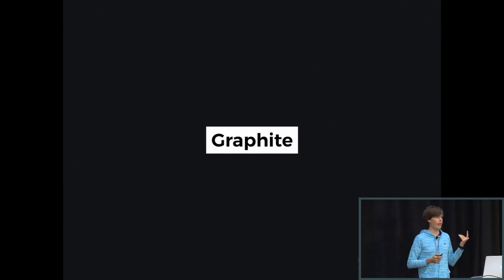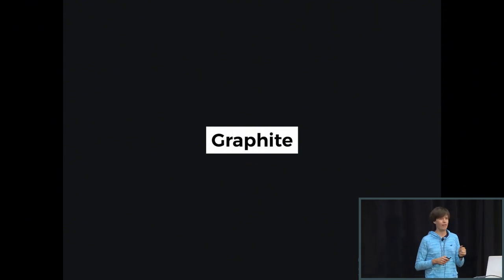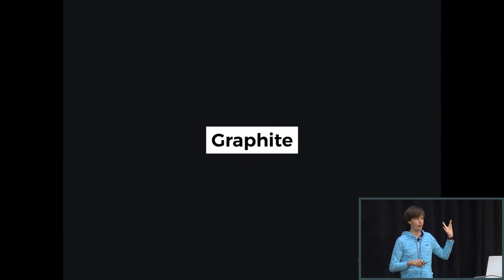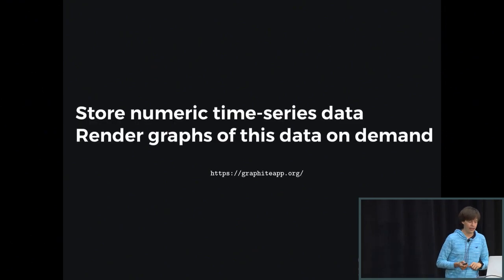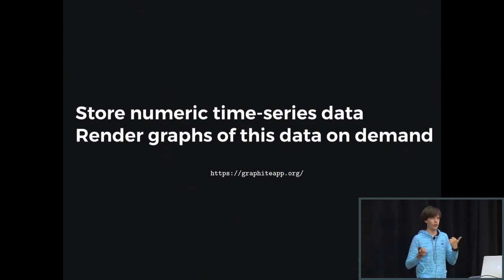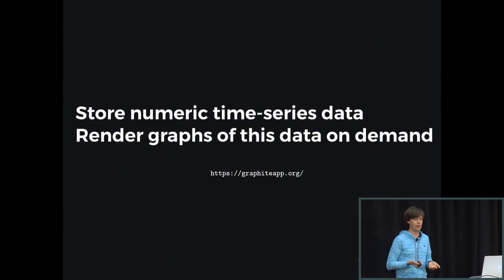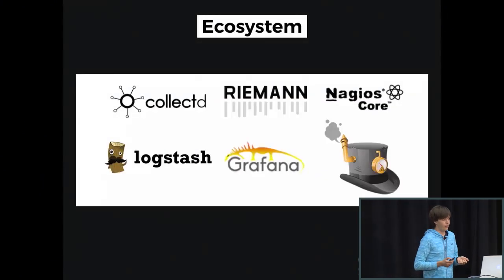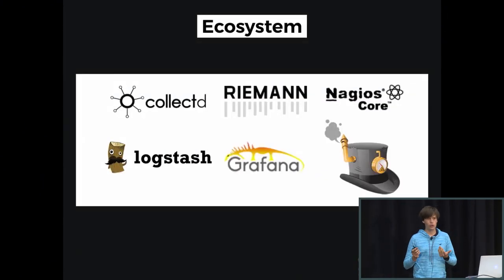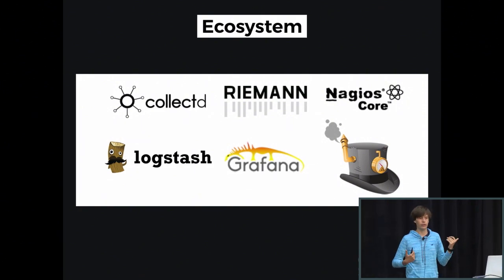Who has ever used Graphite here? Quite many people. Who has experienced scaling problems with Graphite? Several. For those who don't know what Graphite does — it stores numeric time series data and renders graphs for that data on demand. A huge advantage of Graphite is its large ecosystem: CollectD, Riemann, Nagios, Logstash, Grafana, and CodaHale Metrics all have reporters, so you can build an in-house monitoring solution using Graphite together with several other apps.